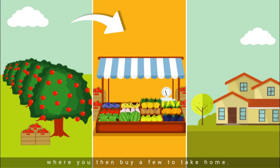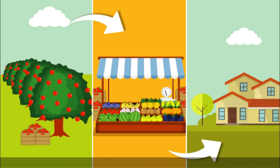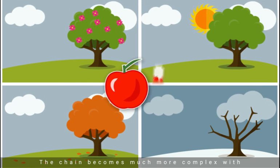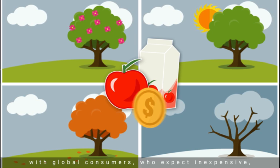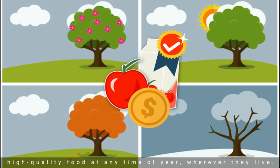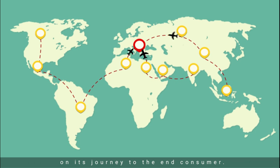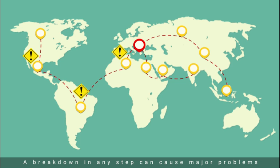Take an apple for example — a farmer grows it, harvests it, and takes it to the nearby market where you then buy a few to take home. This is an example of a simple supply chain. The chain becomes much more complex with global consumers who expect inexpensive, high-quality food any time of year, wherever they live. As food is distributed throughout the world, it goes through several steps in the global supply chain on its journey to the end consumer. A breakdown in any step can cause major problems and result in contamination.